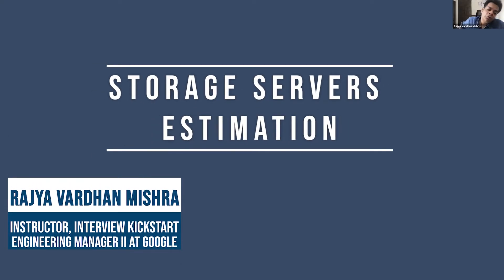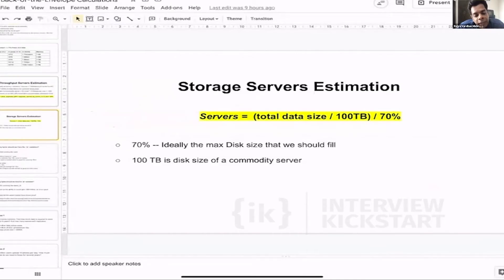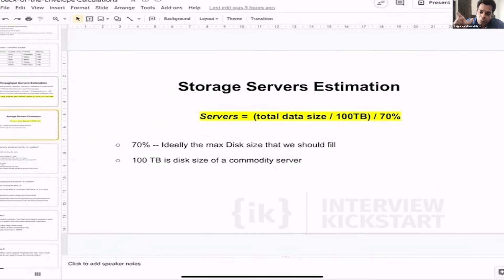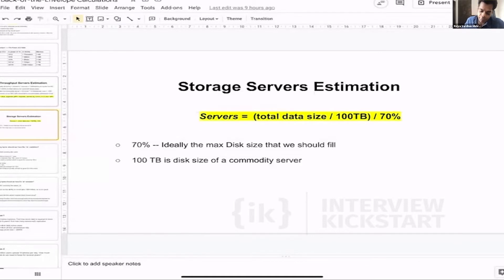How do we calculate how many storage servers are required? First, we estimate the total data size that is required. Once you have identified the total data size requirement, you divide it by 100 terabytes — because, as we know from the previous slide, 100 terabytes is the disk size of a commodity server — and then we divide it by 70 percent.